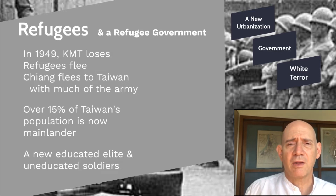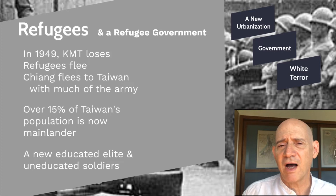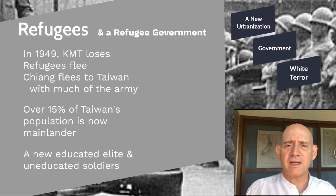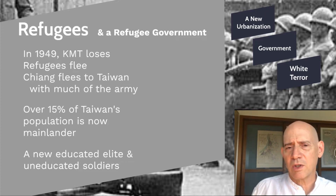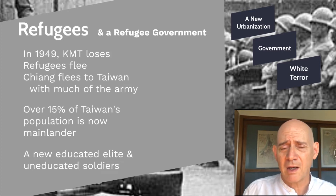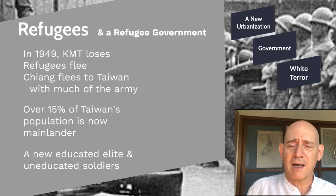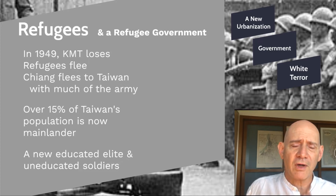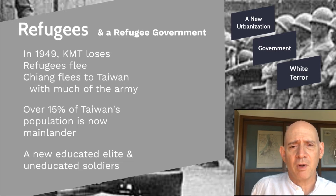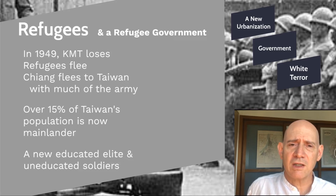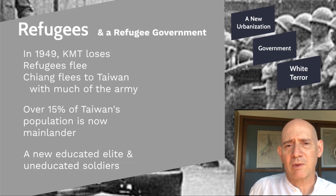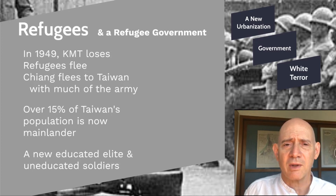Like the Japanese who spoke Japanese before, the mainlanders mainly speak Mandarin Chinese. Very few Taiwanese are able to speak Mandarin. So the Taiwanese have to start relearning a new language to understand what the government is saying. The mainlanders who come in are often the educated upper-middle class — they're the new educated elite coming in to replace the higher-ranked Japanese who left.